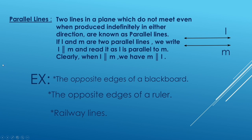Definition of parallel lines: Two lines in a plane which do not meet even when produced indefinitely in either direction are known as parallel lines. Here we have two lines L and M. They are produced indefinitely in both directions — extended in both directions — and even though they are extended, they are not meeting. Such lines are known as parallel lines.